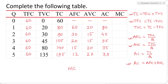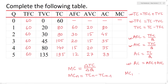Now for marginal cost. Marginal cost equals delta TC divided by delta Q. The total cost of N units equals the total cost of N units minus total cost of N minus 1 units. When output is 0, the marginal cost is undefined. Marginal cost of 1 unit equals total cost of 1 unit minus total cost of 0 units.